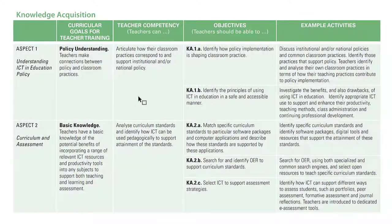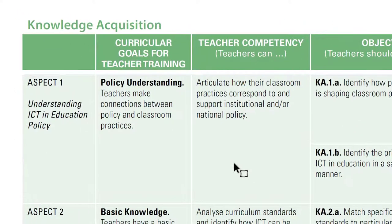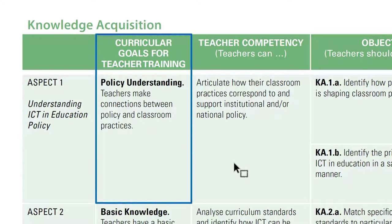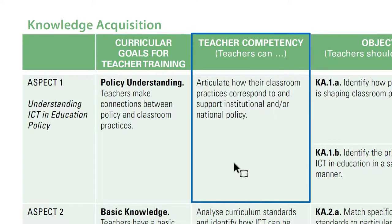Turning to page 28, we can now see the suggestions of how to interpret or decipher what that particular competency might be. In the first row, for aspect one — understanding ICT and education policy — it provides a goal in the second column, and then in the third column is the actual competency: articulate how classroom practices correspond to and support institutional and/or national policy.